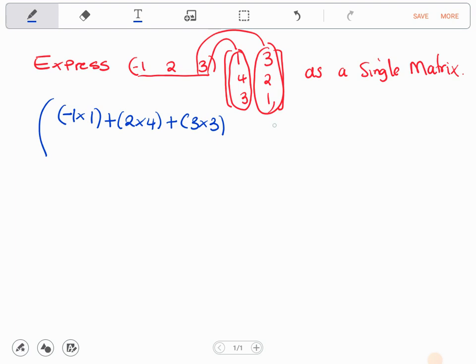So negative 1 times 3. Again, we go back. Negative 1 times 3. Plus 2 times 2. Plus 3 times 1. Like that. Following each other. So this is how you should multiply.